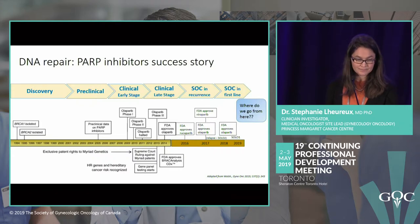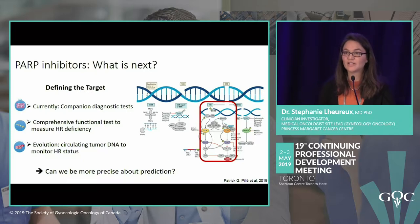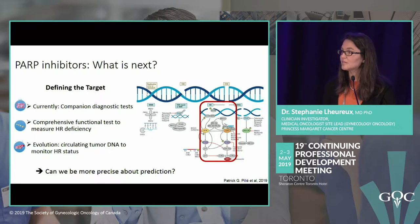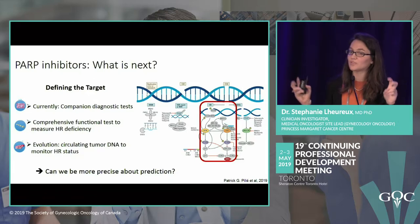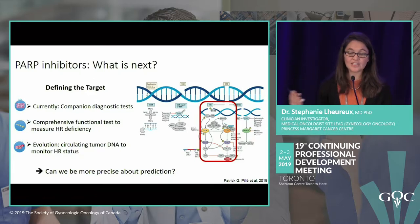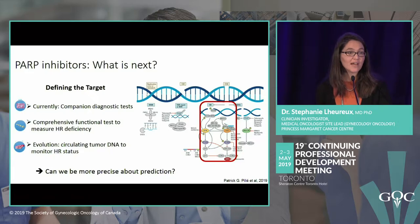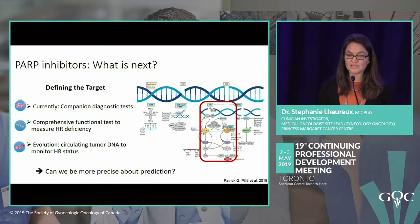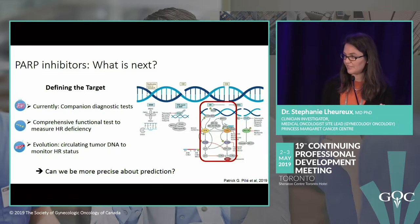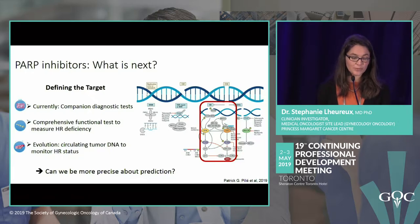Where do we go from here? We need to better define our targets. BRCA1 and 2 patients have the most activity, but BRCA-like patients also benefit, which is why niraparib is approved broadly. We need to better identify the DNA repair defect beyond the current companion diagnostics — new functional tests measuring homologous repair deficiency are needed. Circulating tumor DNA may help predict who will benefit.